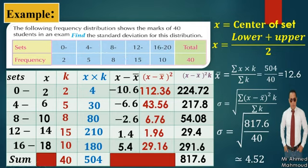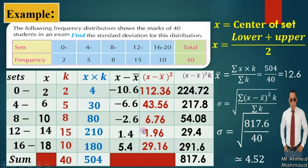To summarize: if given raw numbers, use a 3-column table; if given a frequency table without sets, use a 6-column table; if given a frequency table with class intervals (sets), use a 7-column table. This is very important — one of these types will appear in your exam, inshaaAllah.